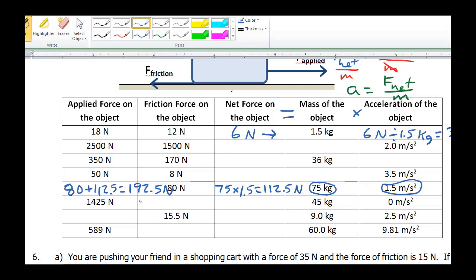So let's just check our work here. Applied force of 192.5 minus 80 gives us a net force of 112.5 newtons, which will cause a 75 kilogram object to accelerate at a rate of 1.5 meters per second squared. Okay.